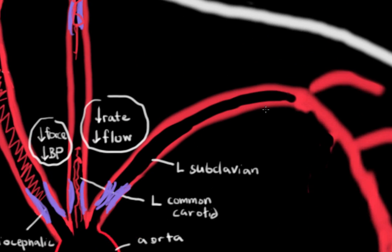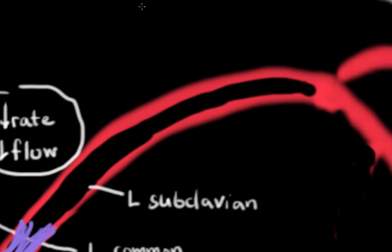Lastly, to diagnose Takayasu Arteritis, you may first notice that the patient has an increased ESR. This is a lab you get for acute inflammation. So basically you're finding that the patient has an inflammatory issue. And that's what it is in vasculitis, inflammation of blood vessels.